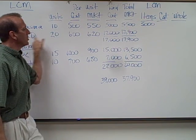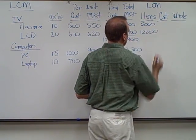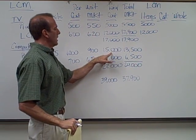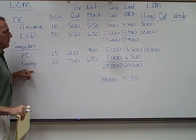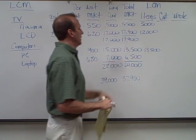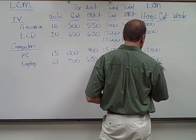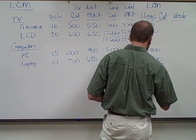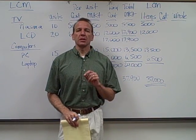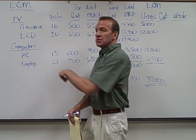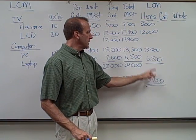For LCD TVs, the cost ($12,000) is lower than the market ($12,400), so we use $12,000. For PCs, the market ($13,500) is lower than the cost ($15,000), so we use $13,500. For laptops, the market ($6,500) is lower than the cost ($7,000), so we use $6,500. Totaling these up gives us $37,000 as the Lower of Cost or Market value by item.